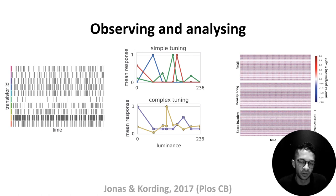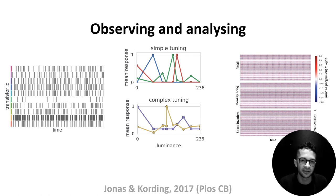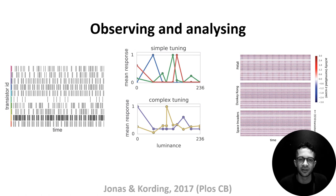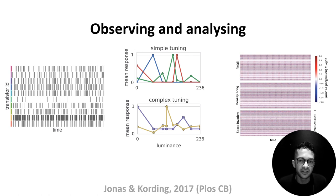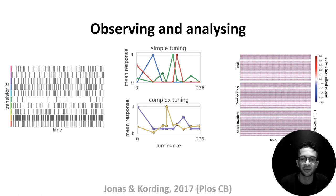So next, they simulate the microprocessor and observe the activity patterns of its transistors, much like a neuroscientist might record and analyse neural activity. The figure on the left shows the off-to-on transitions of 10 transistors over time, which look surprisingly like spikes in a raster plot. With these data, the authors then try to analyse the tuning properties of individual transistors — in this case, how their activity changes as a function of pixel luminance. The middle plot shows some of the results, with luminance on the x-axis, each transistor's mean response on the y-axis, and different coloured lines representing five different transistors. Like neurons in the brain, some transistors seem to have simple tuning and are correlated with single luminance values, while others seem to have more complex tuning. But does this help us understand how the microprocessor works? Not really, as none of these transistors directly control pixel luminance.